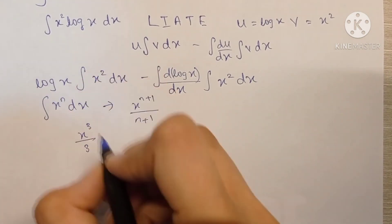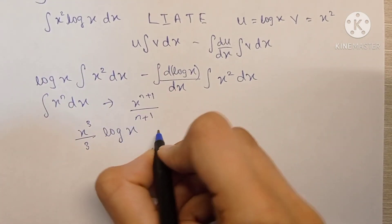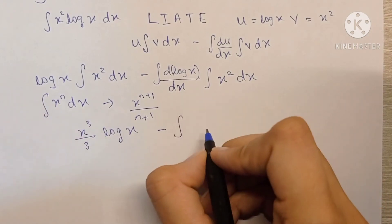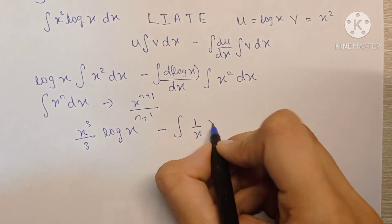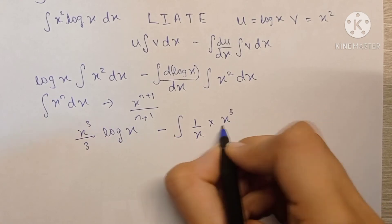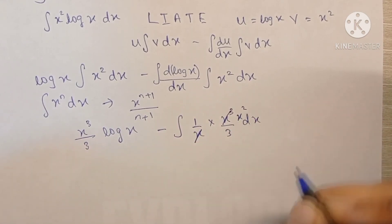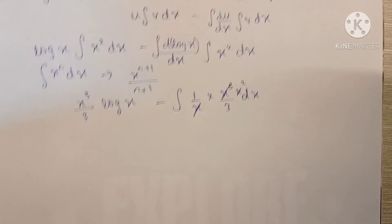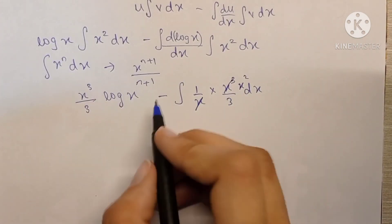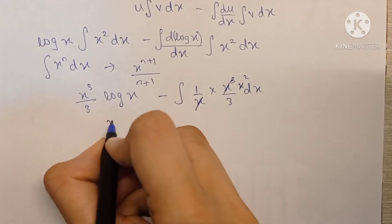And we have the log x term minus the differentiation of log x is 1 upon x into the integration of x square, which is x cube by 3. One of the x gets cancelled, so this becomes x square. Now we can keep the one by three term outside because it's a constant.